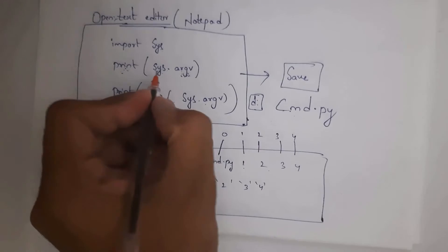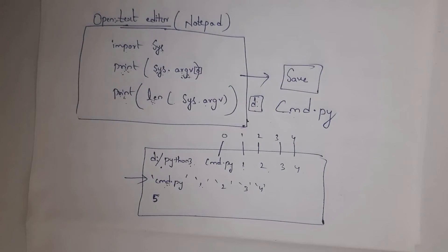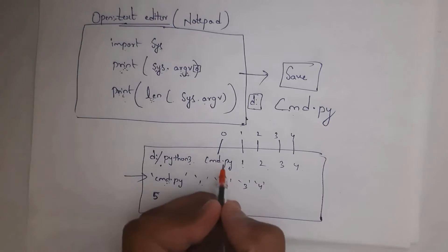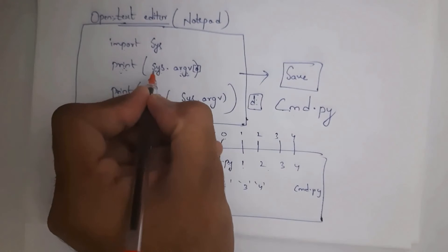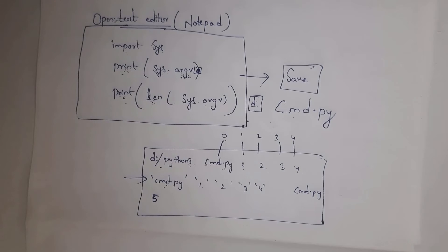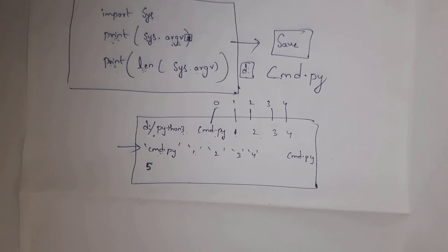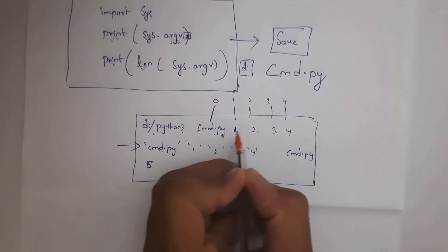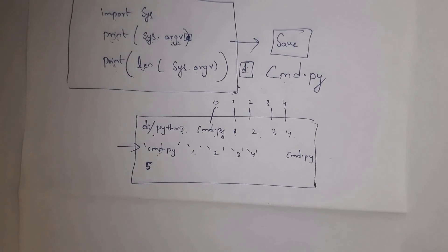For example, if you write sys.argv[0], whatever input is present at index number 0 will be displayed as output. Index number 0 contains the file name, so you will get cmd.py. If you write sys.argv[1], the argument at index number 1 will be generated as output — that is argument 1. And whatever arguments we pass from the command prompt, everything is treated as a string. So 1, 2, 3, 4 are considered as strings, not integers.